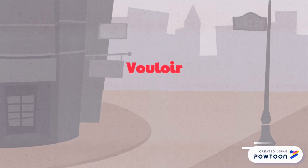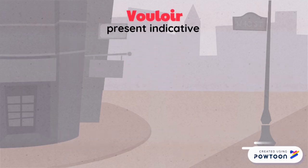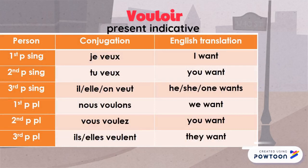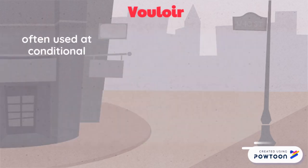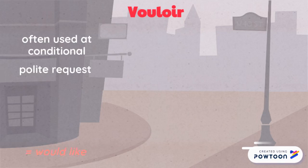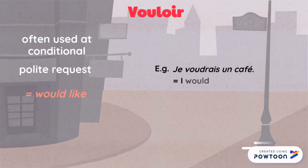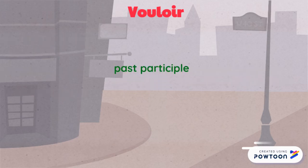The conjugation of vouloir in the present indicative is: je veux, tu veux, il/elle/on veut, nous voulons, vous voulez, ils/elles veulent. It is often used in the conditional to make a polite request and means 'would like.' For instance, 'je voudrais un café' (I would like a coffee). Its past participle is voulu.